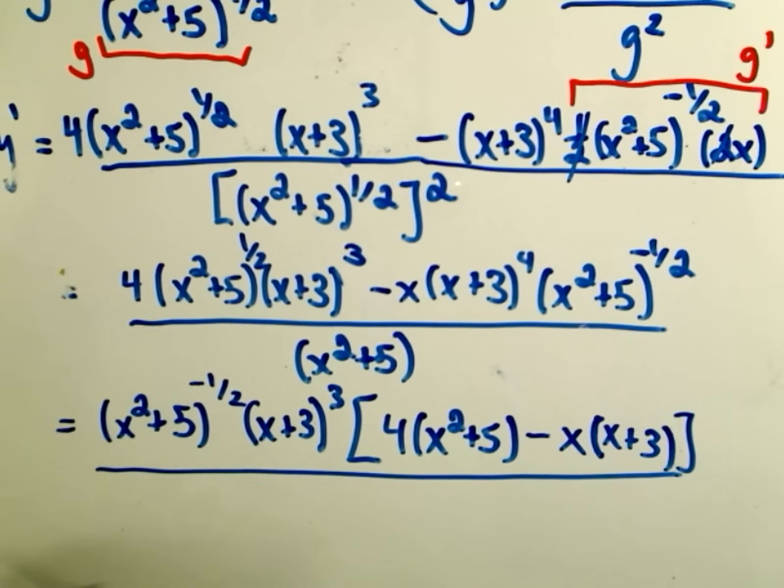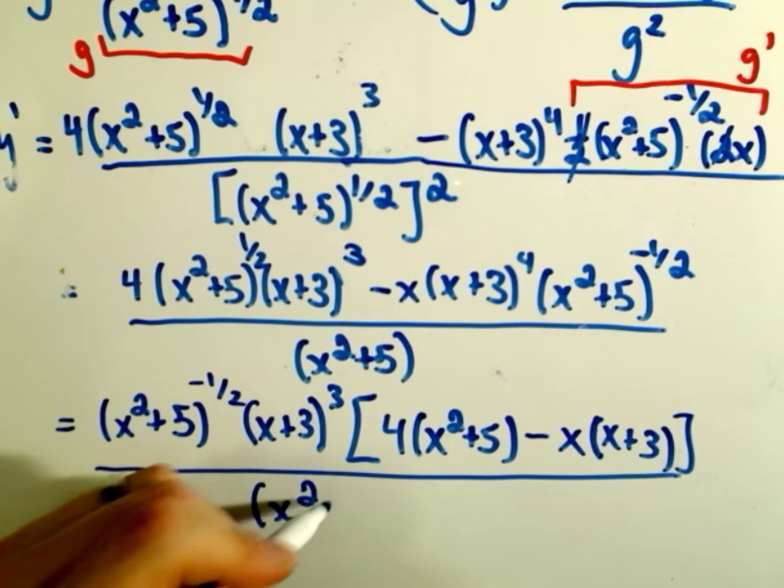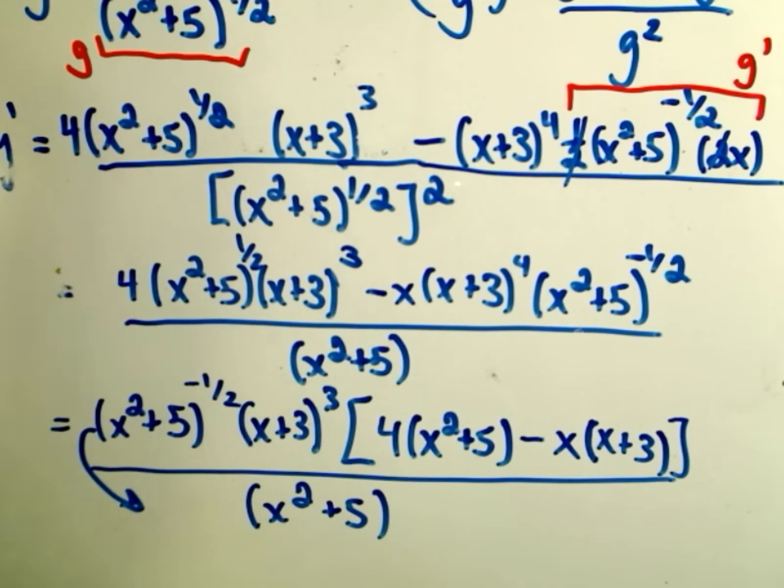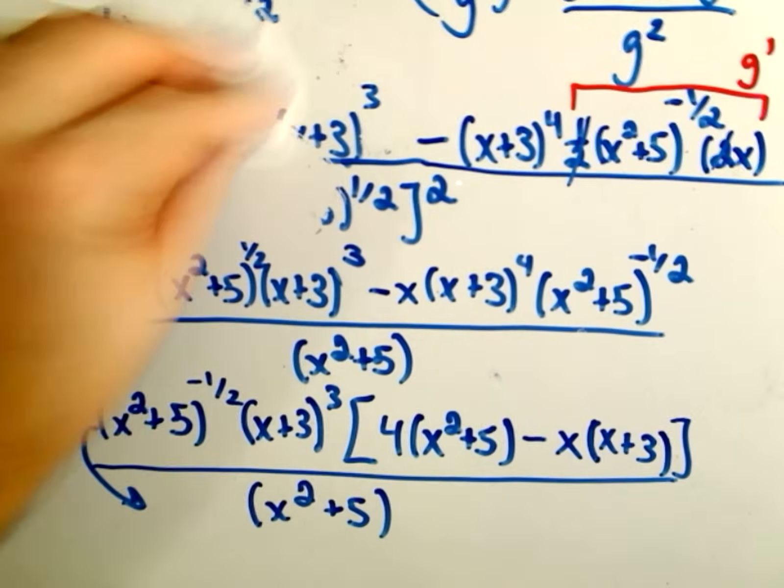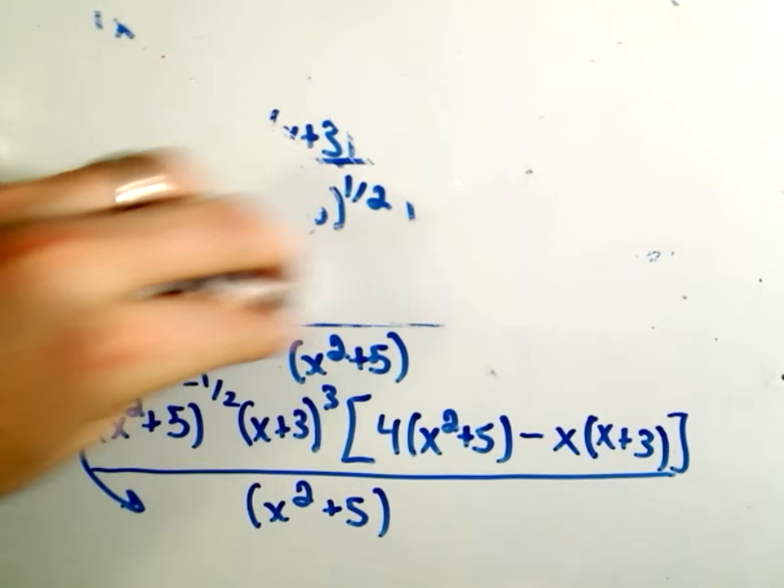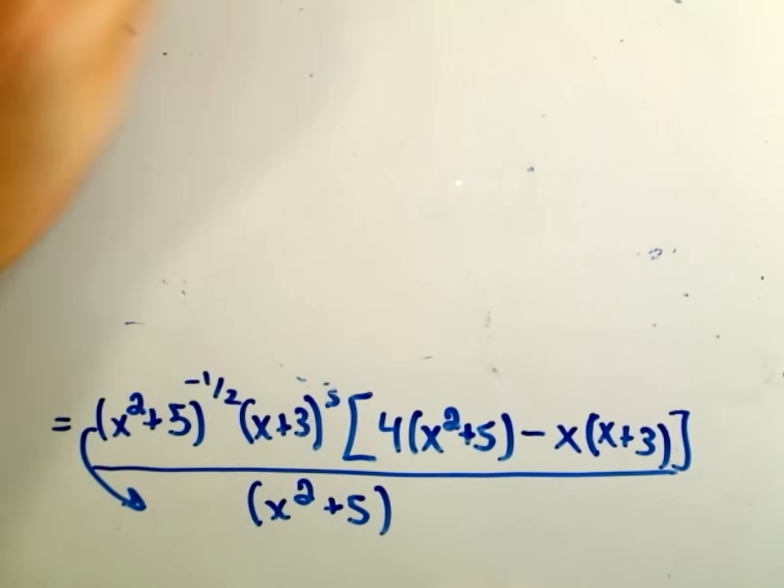Okay, so this is all over, again, x squared plus 5. Now all I'm going to do is just simplify inside the brackets. I'm going to move this thing, the x squared plus 5, to the denominator. So, let's go back upstairs and knock this off.